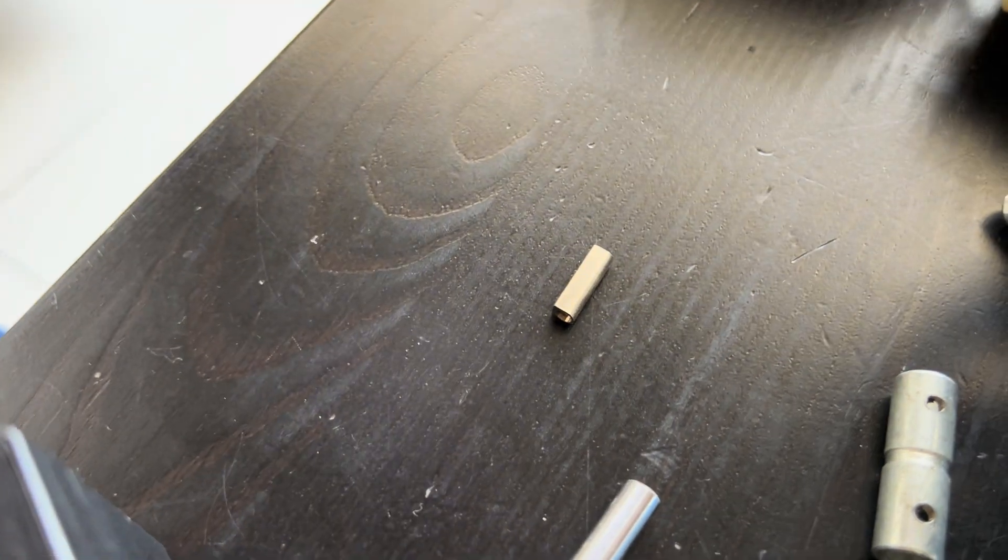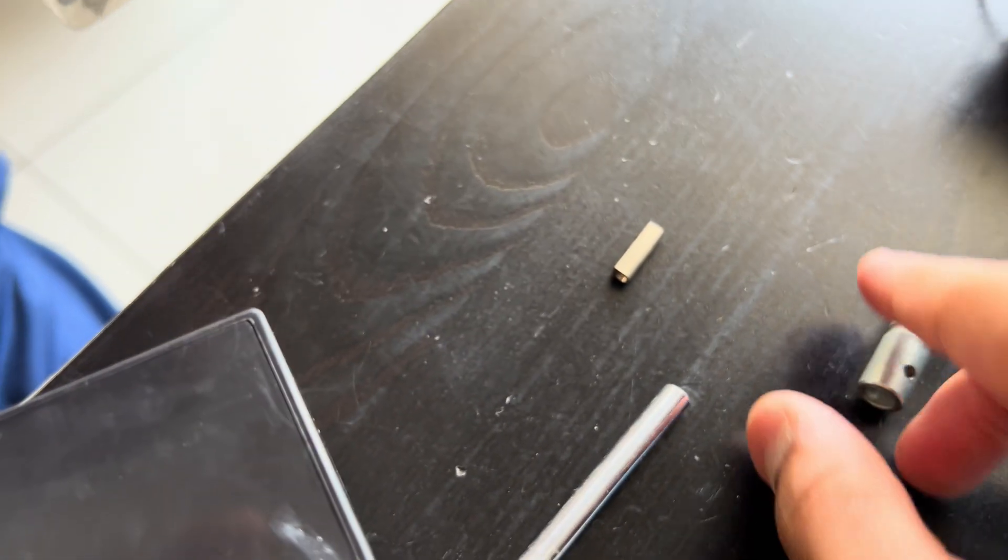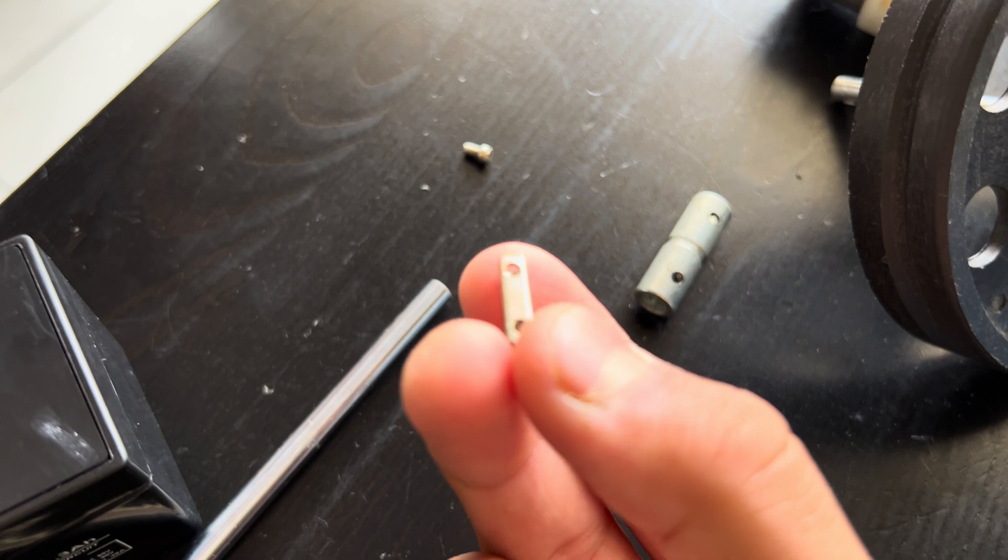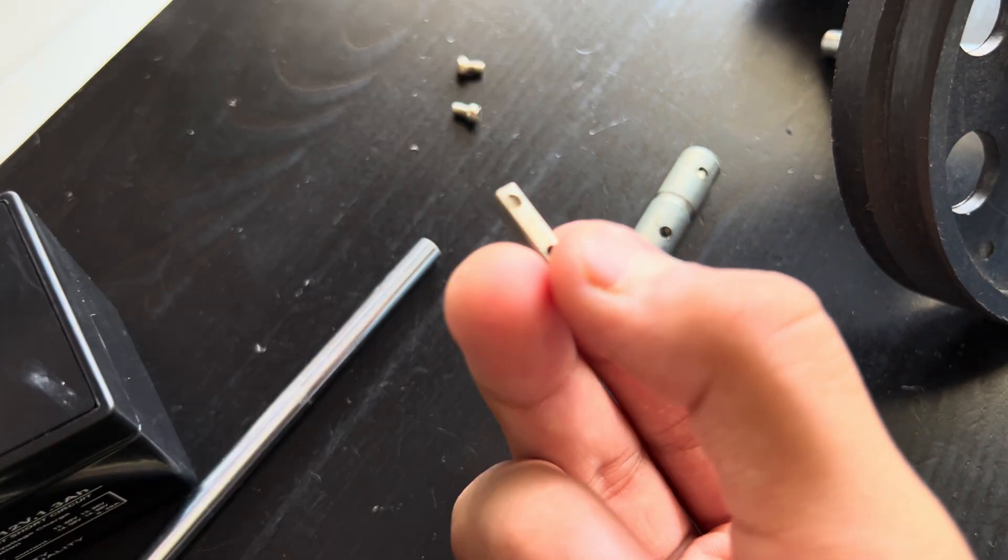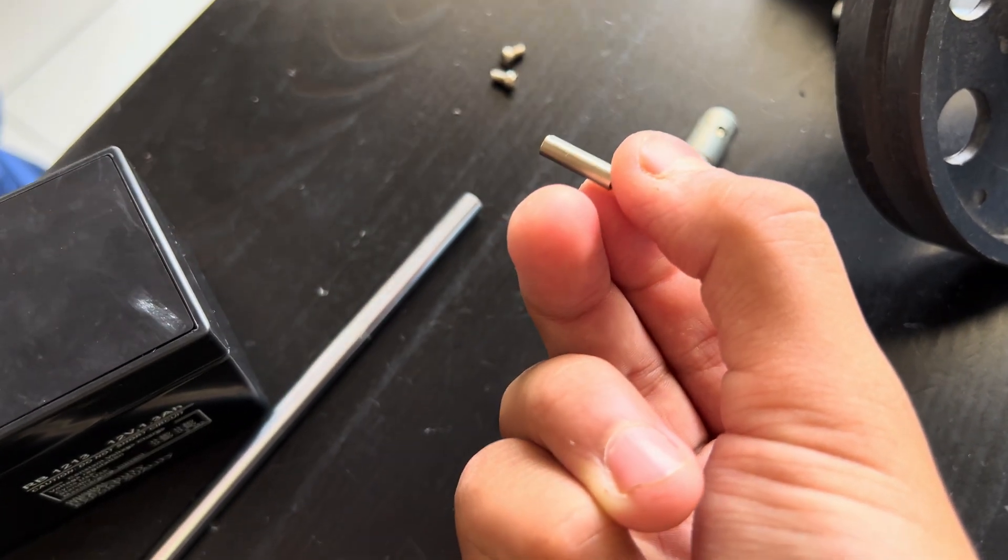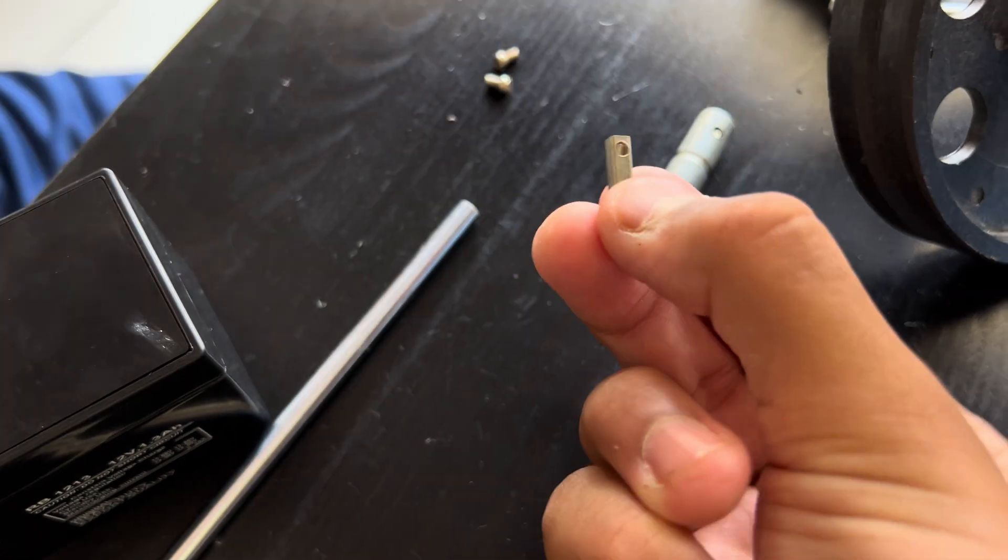This is also a coupling. And the screws are much smaller. And where are those thin rods? One of them is here.